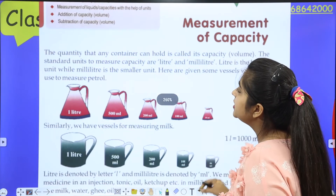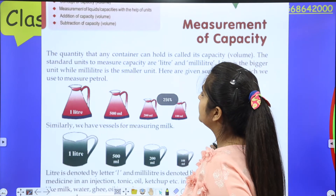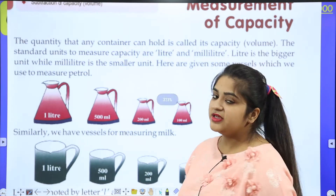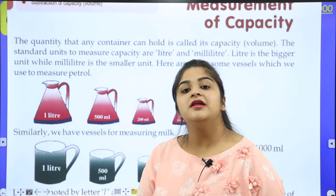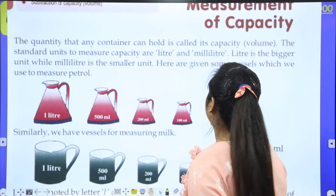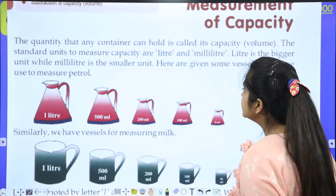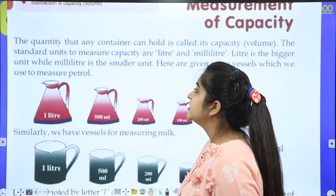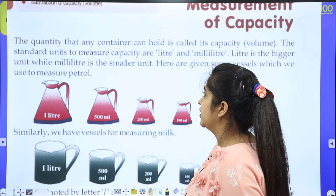The standard units to measure capacity are liter and milliliter. We can measure in liters or in milliliters. Liter is the bigger unit, while milliliter is the smaller unit.